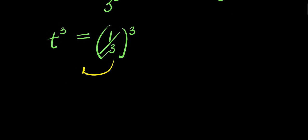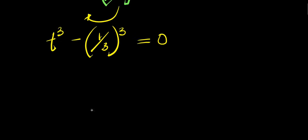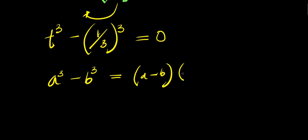So from here we move this over: t to the power 3 minus 1 divided by 3 to the power 3 equals 0. So from here, if you have a to the power 3 minus b to the power 3, this equals a minus b times a squared plus ab plus b to the power 2.